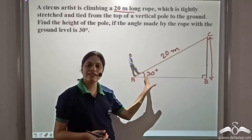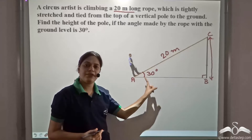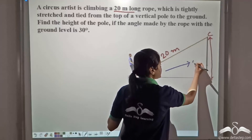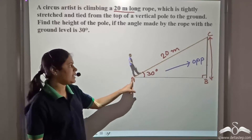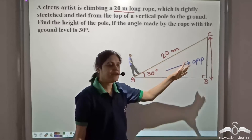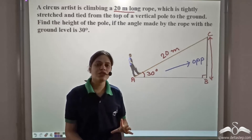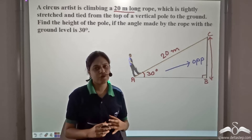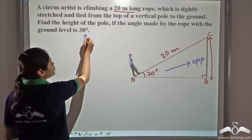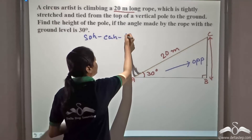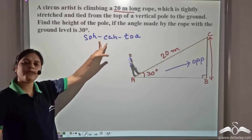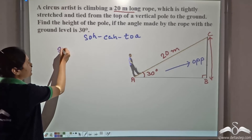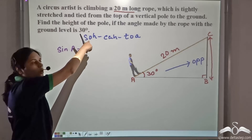What is given to us is AC, that is twenty meters. Considering angle A, which is thirty degrees — if we consider angle A, then CB is the opposite side and AC is the hypotenuse. So we need to find the opposite side given the hypotenuse. We will use a relation which combines opposite side and hypotenuse. Sine is the relation between opposite side and hypotenuse. So we write: sine A equals opposite over hypotenuse.